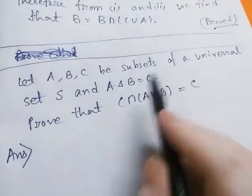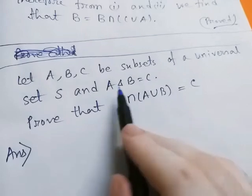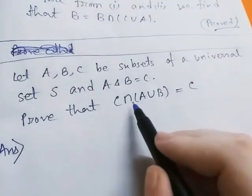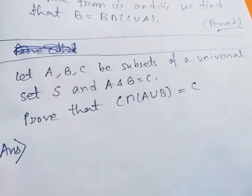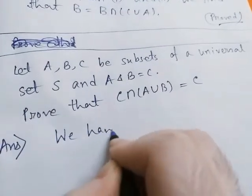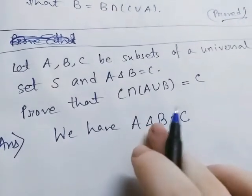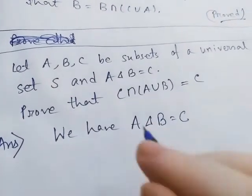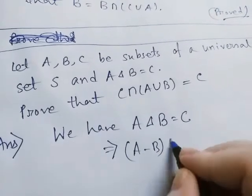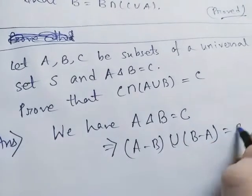Let A, B, C be subsets of universal set S, and A delta B equal to C — that is, the symmetric difference of two sets A and B equals C. Prove that C intersection A union B equals C. We have A delta B equal to C. By definition of symmetric difference, we can write this as A minus B union B minus A equal to C.